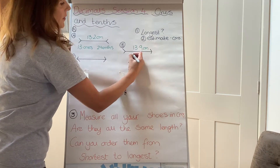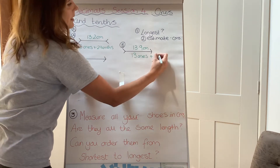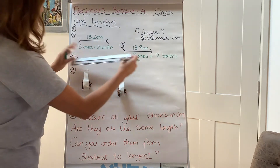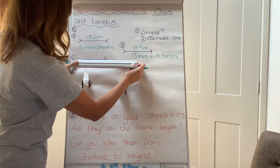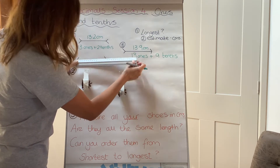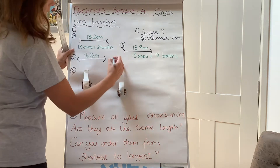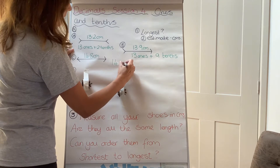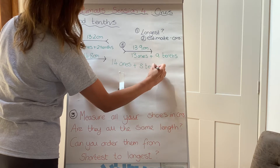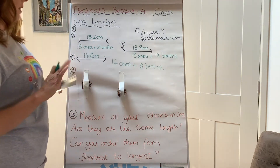That is 13 whole ones and 9 tenths. And the final one is a lot longer — that is 14.8 centimetres, so that is 14 ones and 8 tenths. Which one is the longest? Well, C is the longest.